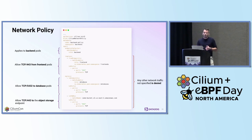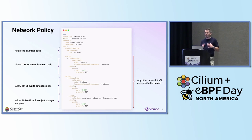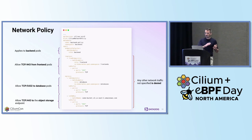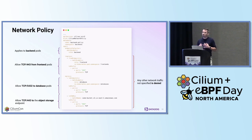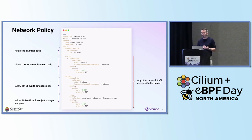Most importantly, when we define a network policy, we determine which pods this policy applies to, what can connect to these pods, and what those pods can connect to. Using such abstractions gives us much more control on what we want to target, as well as enabling much more tightly coupled configuration capabilities.